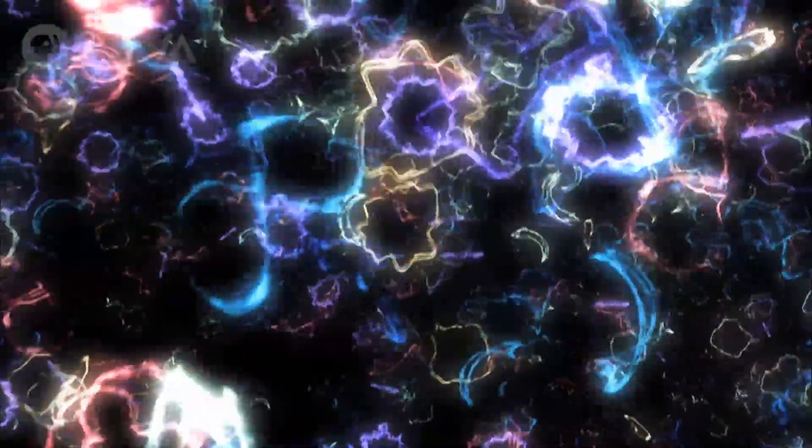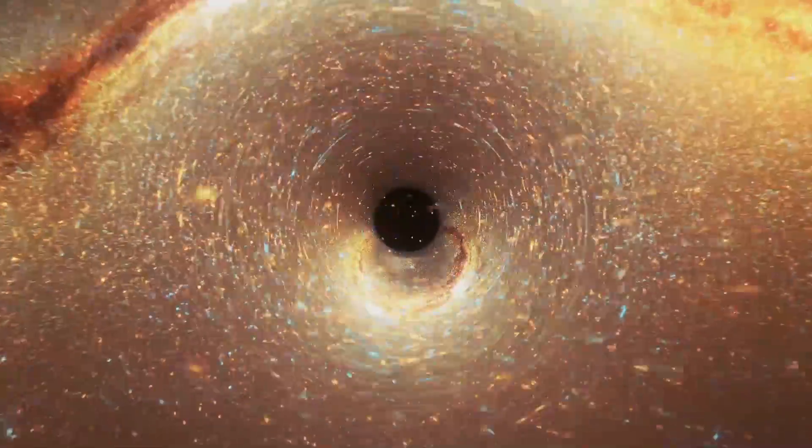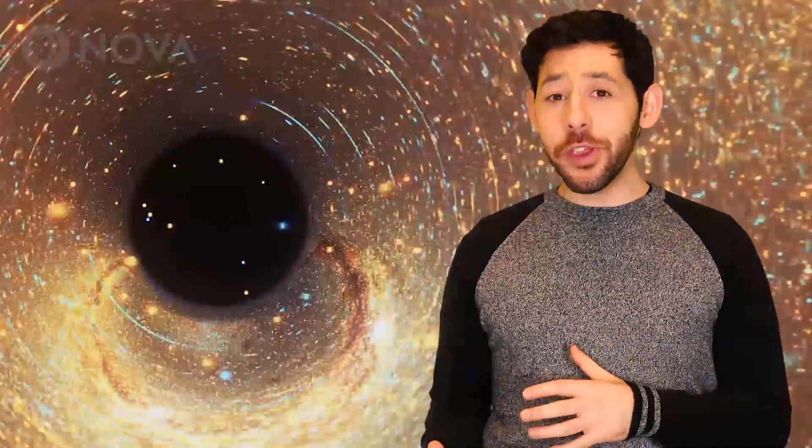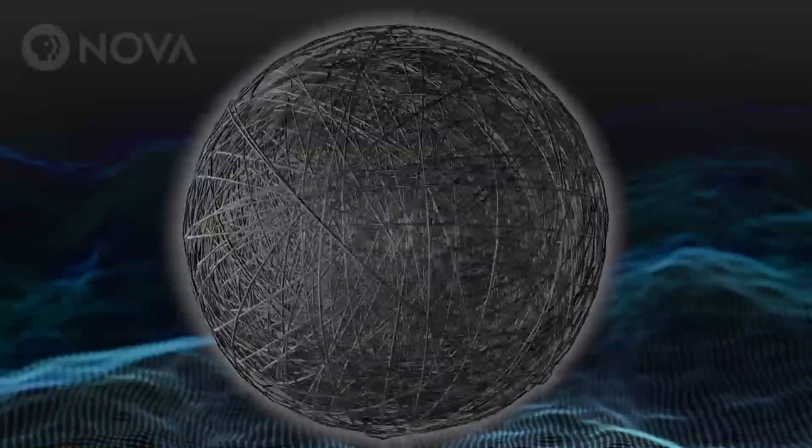In string theory, everything at its fundamental level, even you, is made of tiny vibrating strings. So maybe black holes are no different. One theory is that black holes are a giant fuzzball of strings. There's no infinitely dense singularity and no smooth horizon. There's just this ball of strings.